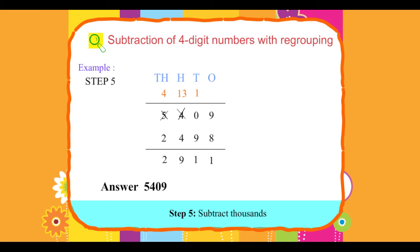Answer: Five thousand four hundred and nine minus two thousand four hundred and ninety-eight equals two thousand nine hundred and eleven.